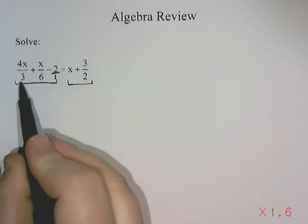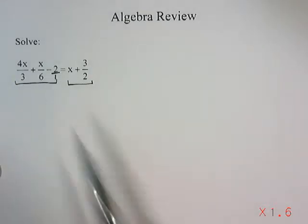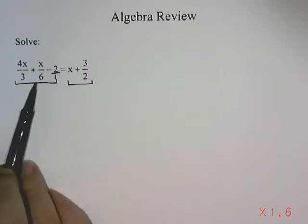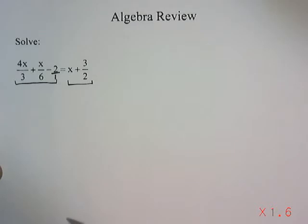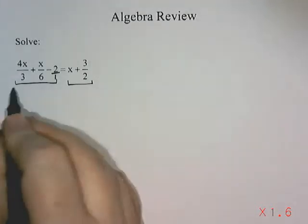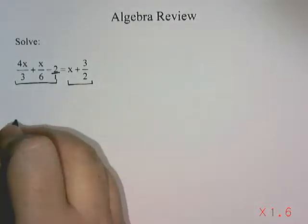So I need to find something that 3, 6, and 1 all go into. I like to pick the largest number that's there, 6, and see whether 3 and 1 will go into it, which it does. So I'm going to make a common denominator on the left side of 6.